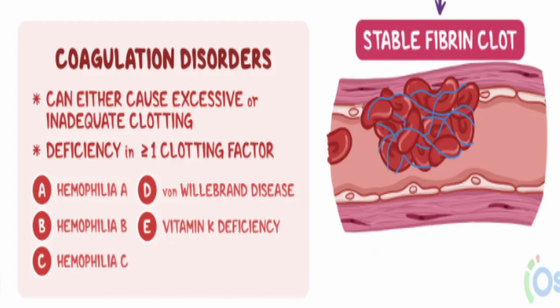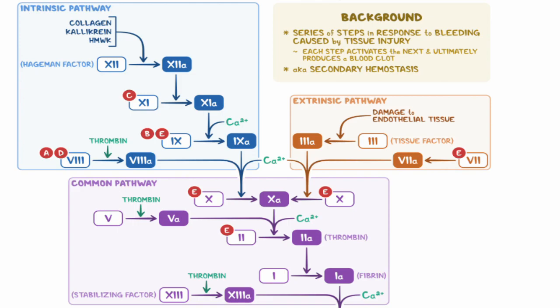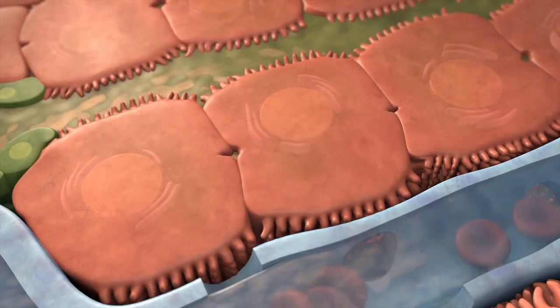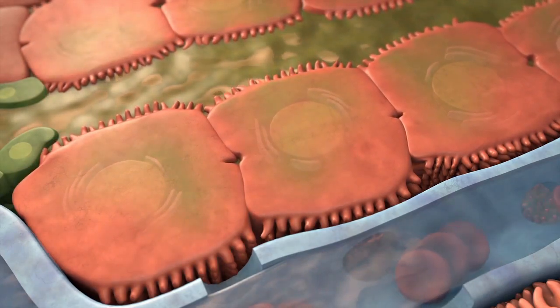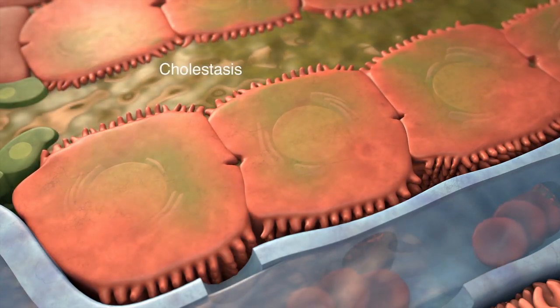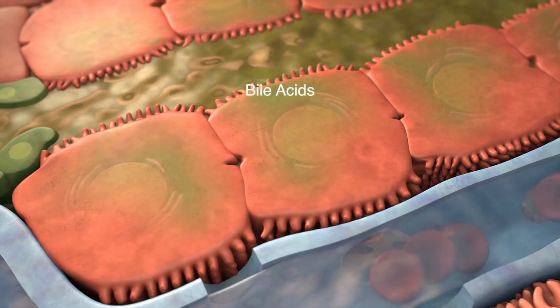A vitamin K deficiency may occur when a sufficient amount of vitamin K is not absorbed from foods, or when not enough food with vitamin K is consumed. Vitamin K is a cofactor required to make factors 2, 7, 9, and 10 functional. Therefore, vitamin K deficiency affects all three pathways. Vitamin K is synthesised in the liver and tends to be prevalent in individuals with mild to moderate chronic cholestatic liver disease.